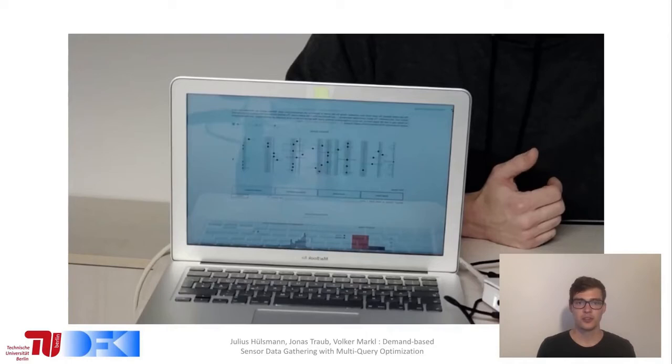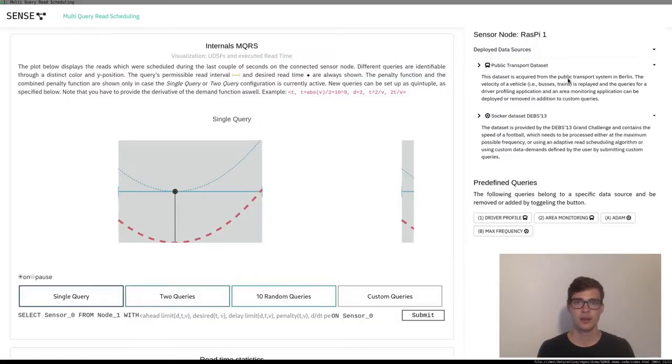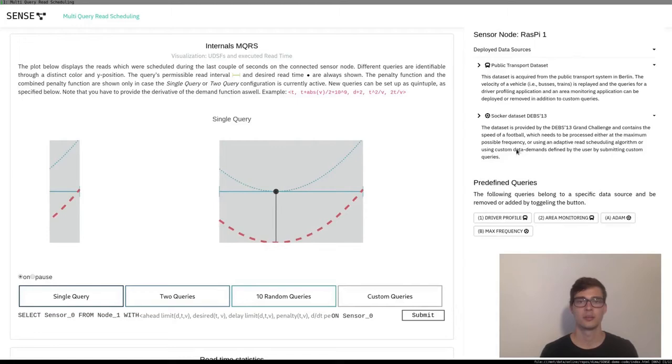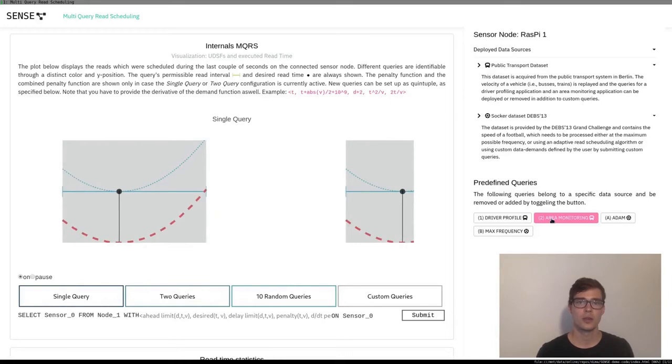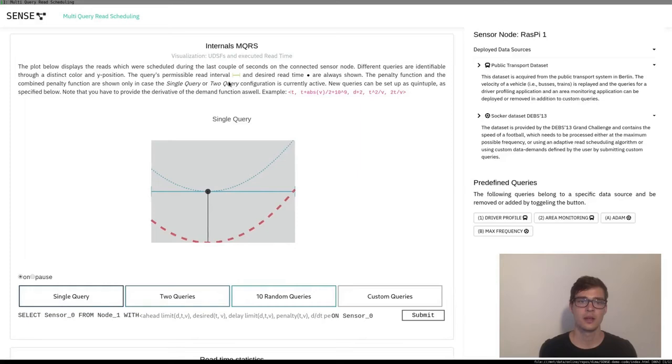Let's switch to the demonstration dashboard to show how to operate user-defined sampling functions. On the right-hand side, you can see the currently deployed data sources on the connected sensor. We use an open source framework for replaying previously acquired data on our sensor node. The first data set contains data from public transport vehicles. We offer two real-world applications on this data set, which you see listed underneath in the predefined query section.